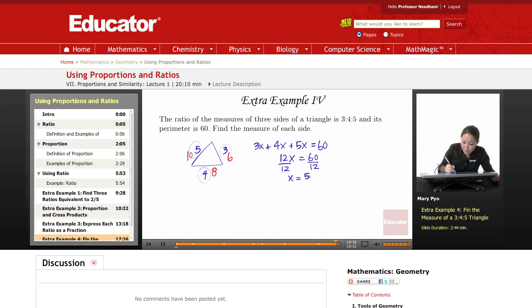So if x is 5, that means if the ratio is 3 to 4 to 5, the shortest side is going to be 3 times 5, which is 15, and then 4 times 5, which is 20, and 5 times 5, which is 25. So then these three are the actual lengths of the sides. If you add them up, they're going to add up to 60, which is the perimeter, and it keeps the same ratio of 3 to 4 to 5.